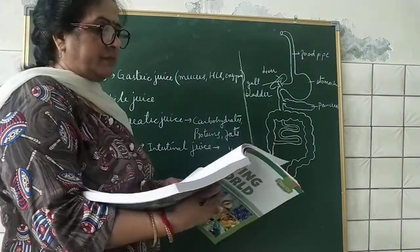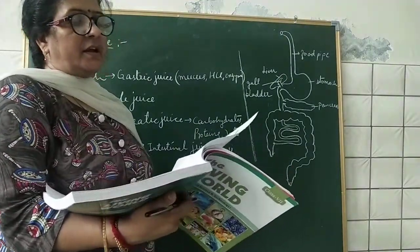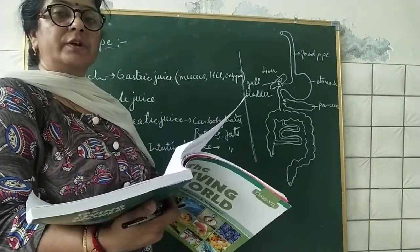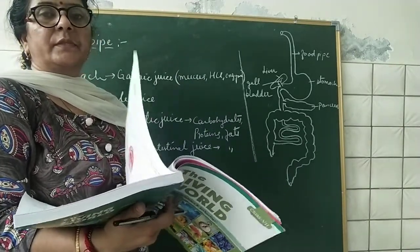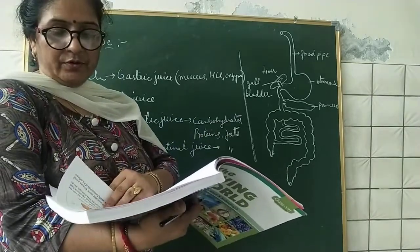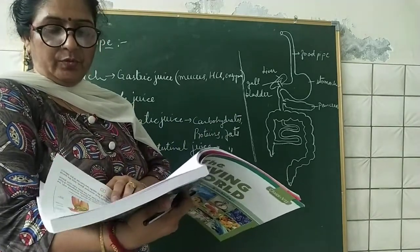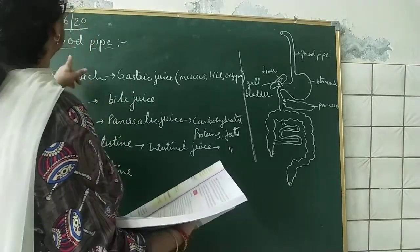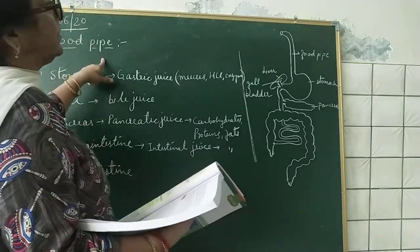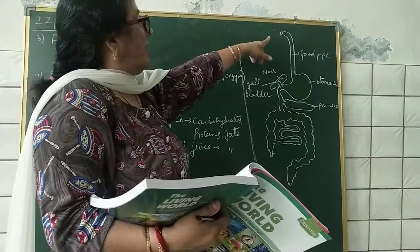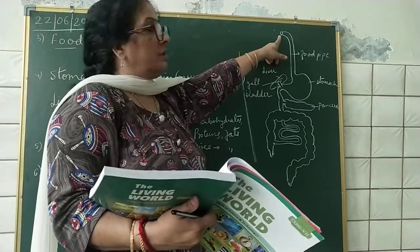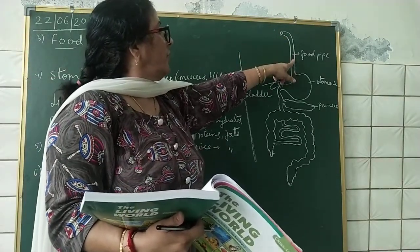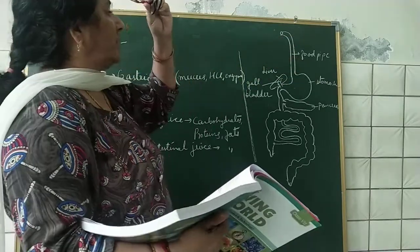Dear students, yesterday I told you about the role of mouth and buccal cavity in the digestion of human beings. Now the next one is food pipe. After chewing the food in the mouth, the food enters into the food pipe, also called esophagus.